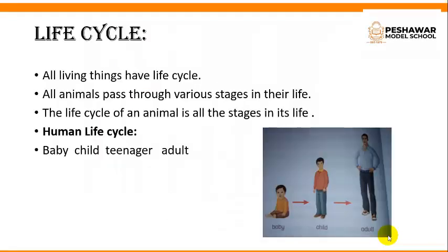Life Cycle. All living things have a life cycle. All animals pass through various stages in their life. The life cycle means the stages a living thing goes through during its life. The different stages that an animal passes through in its life is known as the life cycle — it is a series of changes. The life cycle of an animal is all the stages in its life.